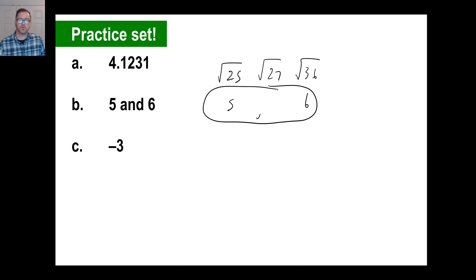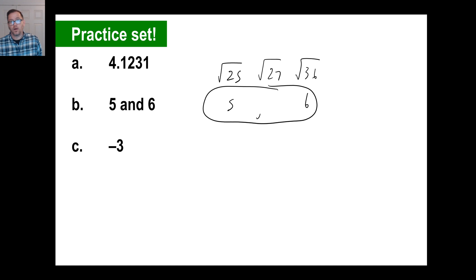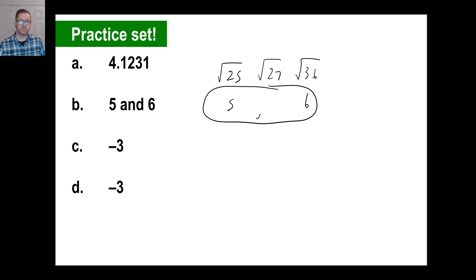C is the cube root of negative 27: negative 3 times negative 3 times negative 3 equals negative 27, so the answer is negative 3. For D, the square root of 81 is 9, minus the square root of 144 which is 12. So 9 minus 12 equals negative 3.